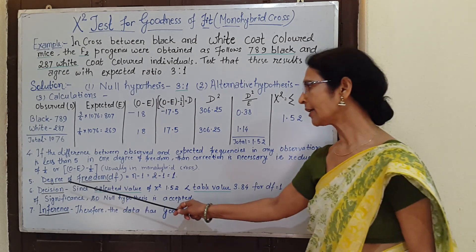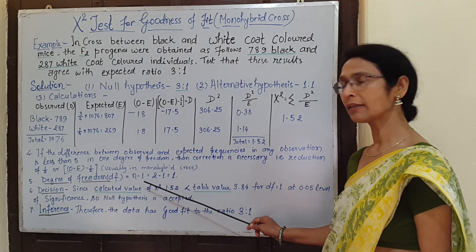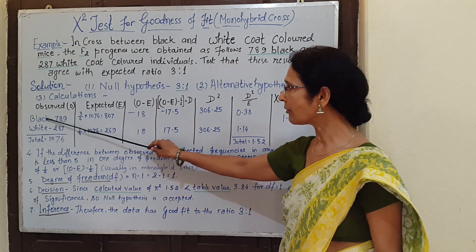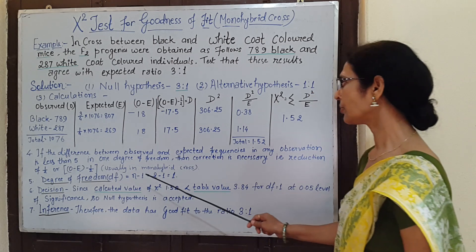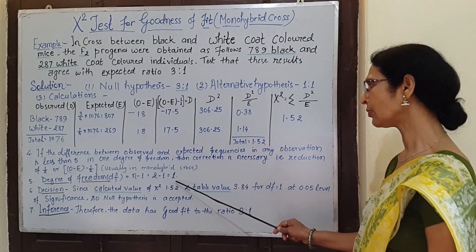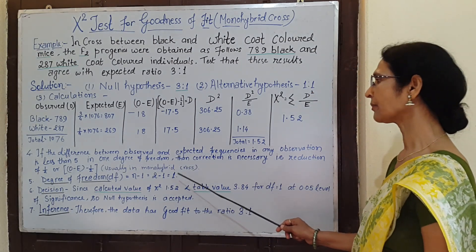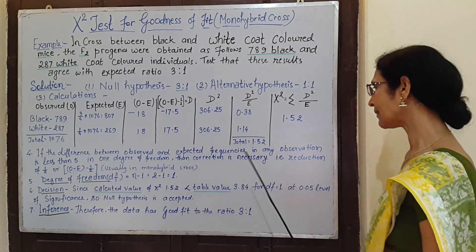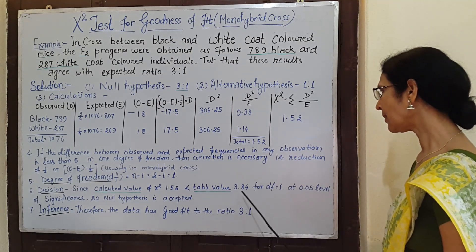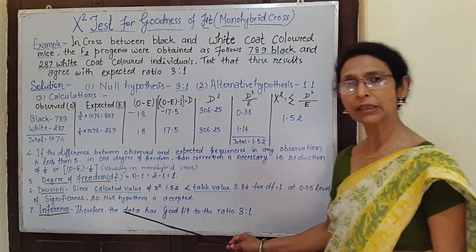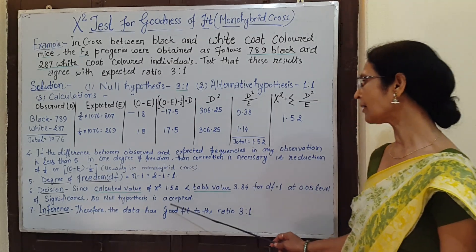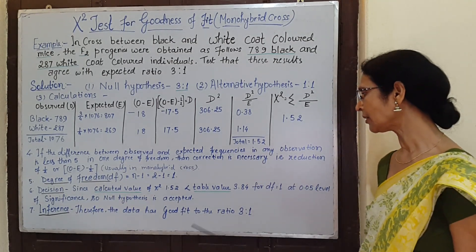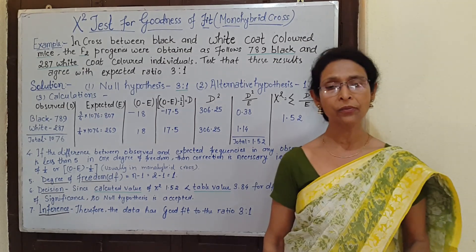The sum of these two is 1.52. This is the calculated value of Chi-Square. Now the degree of freedom is n minus 1, where n is the number of traits: 1, 2. So 2 minus 1 is equal to 1. Since the calculated value is less than the table value, the null hypothesis is accepted. Therefore the data has a good fit to the ratio of 3 is to 1.